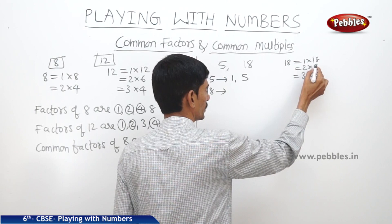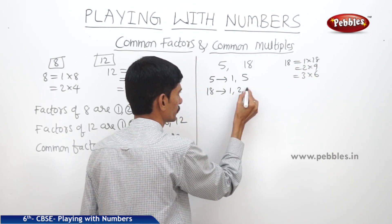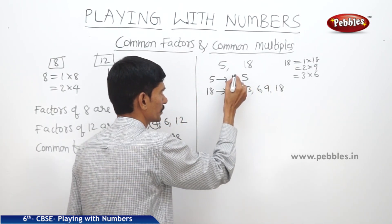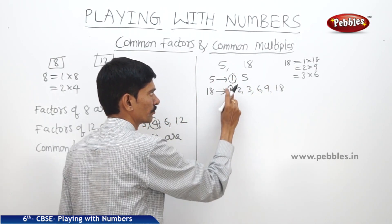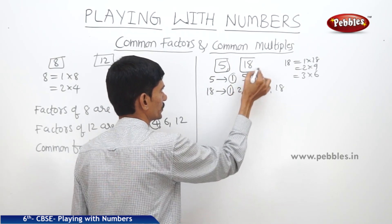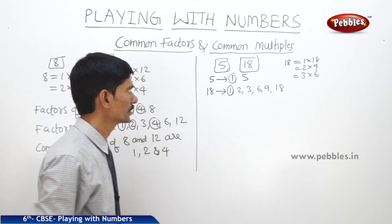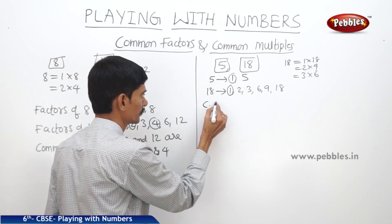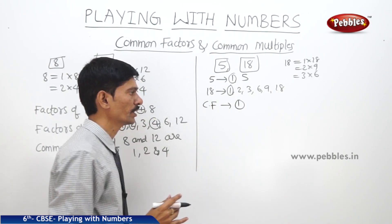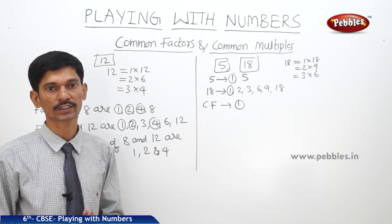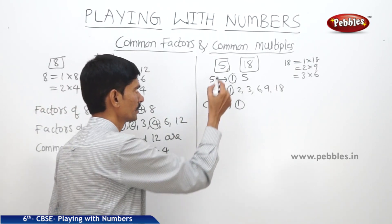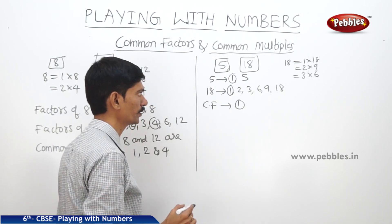So the factors of 18 are 1, 2, 3, 6, 9 and 18. They have only one as a common factor. So 1 is the only common factor of both 5 and 18. When two numbers have only one as a common factor, those two numbers are said to be co-prime numbers. So 5 and 18 are co-prime numbers.